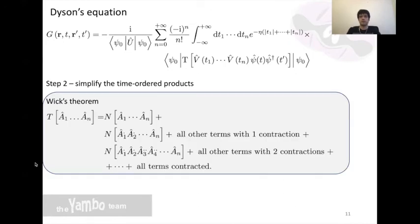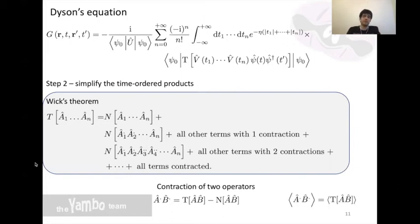This is an important result that tells you how to simplify the sum above by replacing the full time-ordered product by normal products of operators with different numbers of contractions. A contraction between two operators is defined as the difference between the time-ordered and the normal product. Thankfully, the expectation value of a contraction is just the expectation value of the time-ordered product. There's some algebra involved, but if you use Wick's theorem in the expression for G, you arrive at the sum involving only the single particle Green's function and the Coulomb potential.